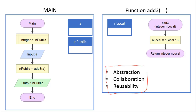The second thing is it allows collaboration. If you have multiple programmers working on one big issue, we can break it down into a smaller set of problems and then give tasks to different people to do different things. Because of the abstraction, each of the programmers would only need to understand what are the inputs and what are the outputs of different parts of the program.